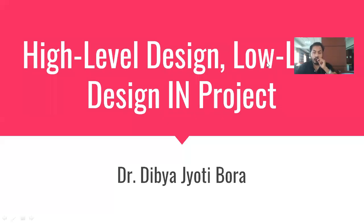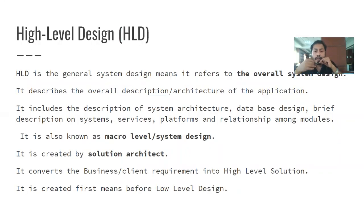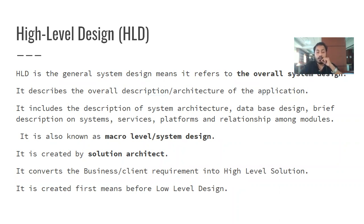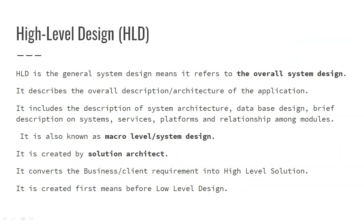So what is high-level design? High-level design means a general system design — it describes the overall description and architecture of your application. It includes the description of the system architecture like database design, brief description of the system services, platforms, and relationship among the modules.